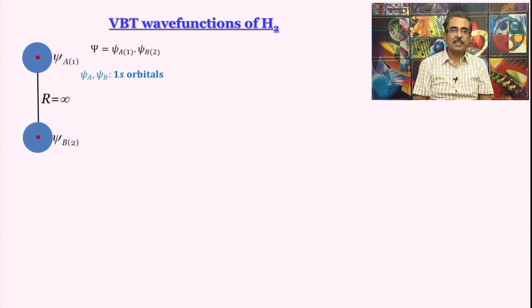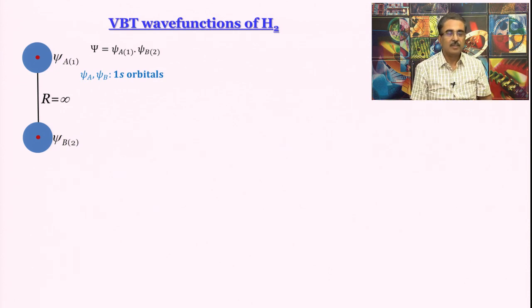This is what it is and remember psi-a and psi-b the way we have written it they are actually 1s orbitals. In hindsight I should have written phi-a and phi-b that would have been better, but the die is cast. So please bear with me. The small psi-a, small psi-b are 1s orbitals, remember they are normalized.